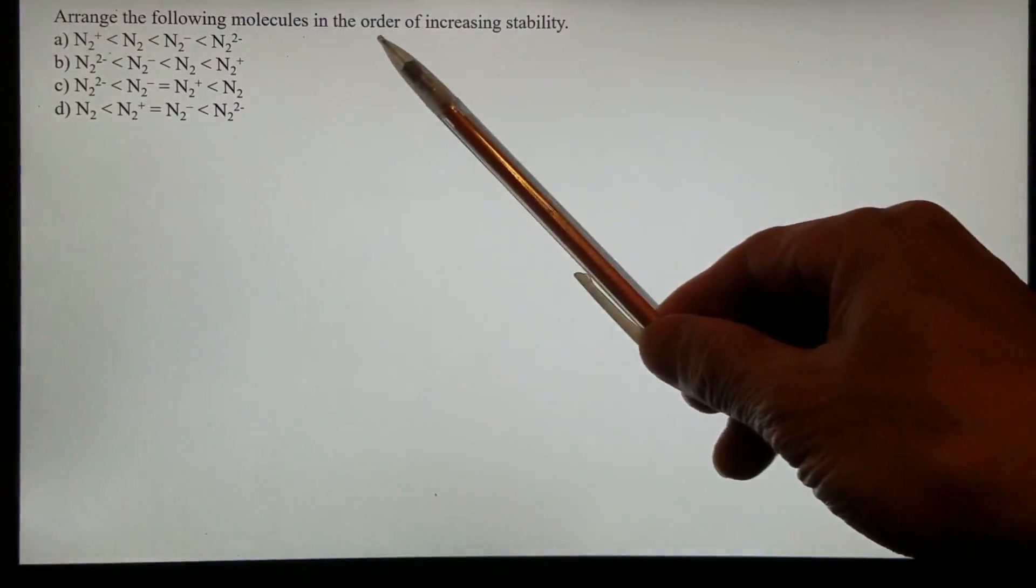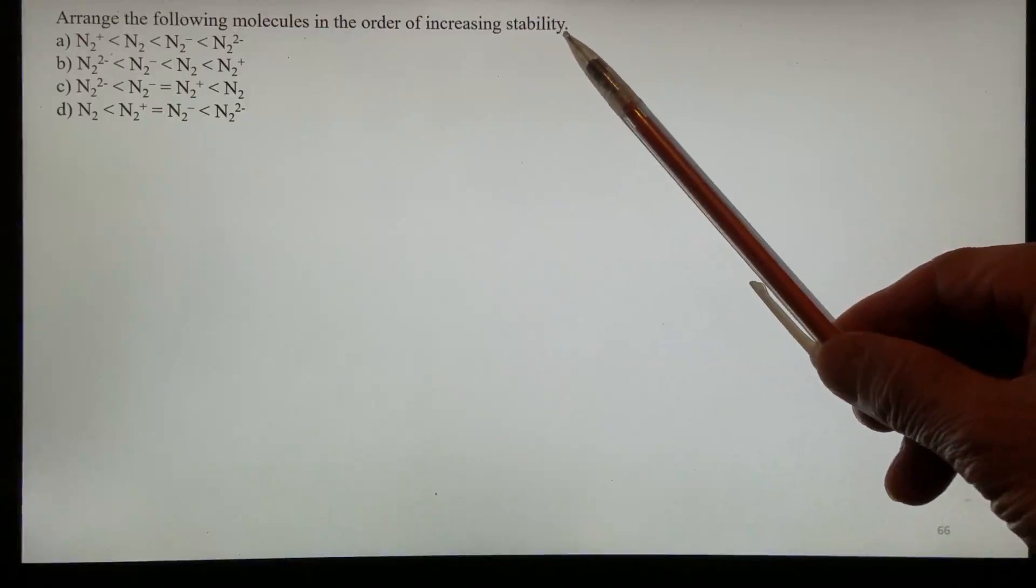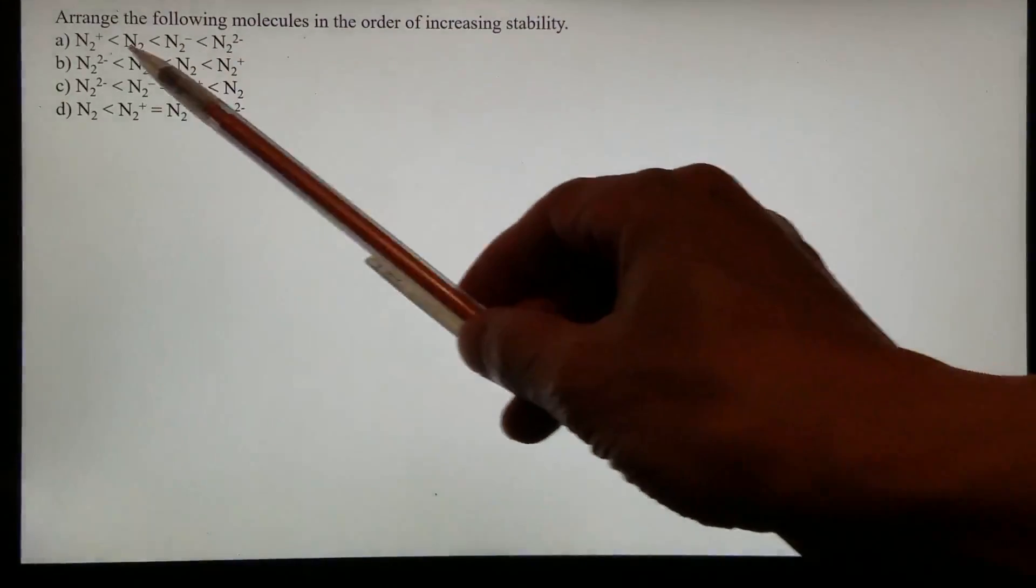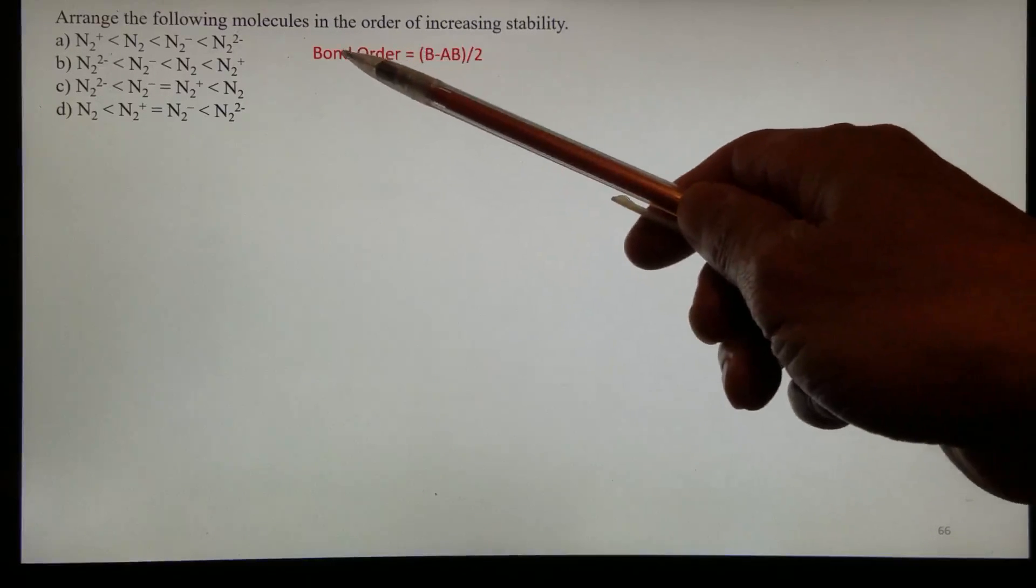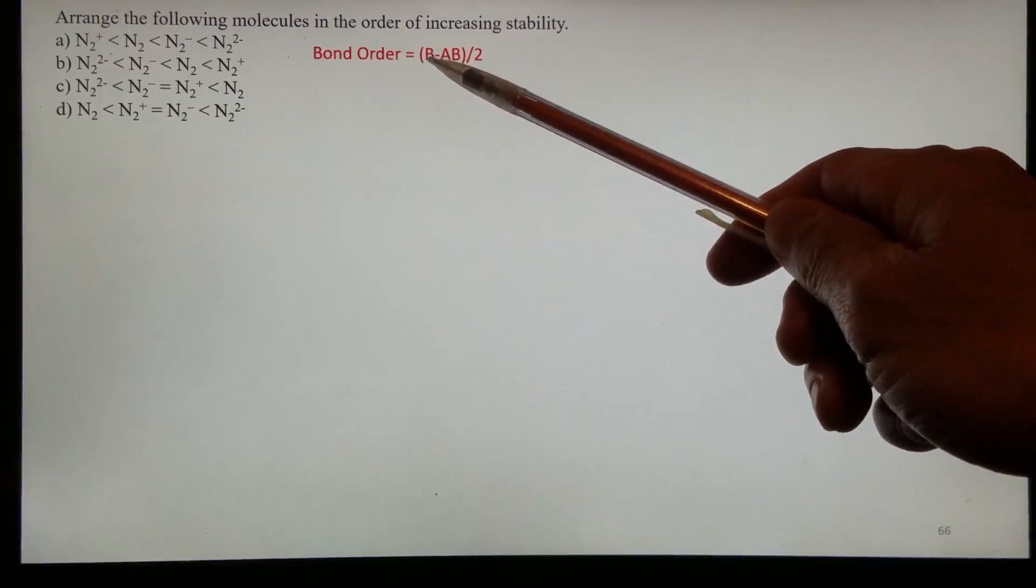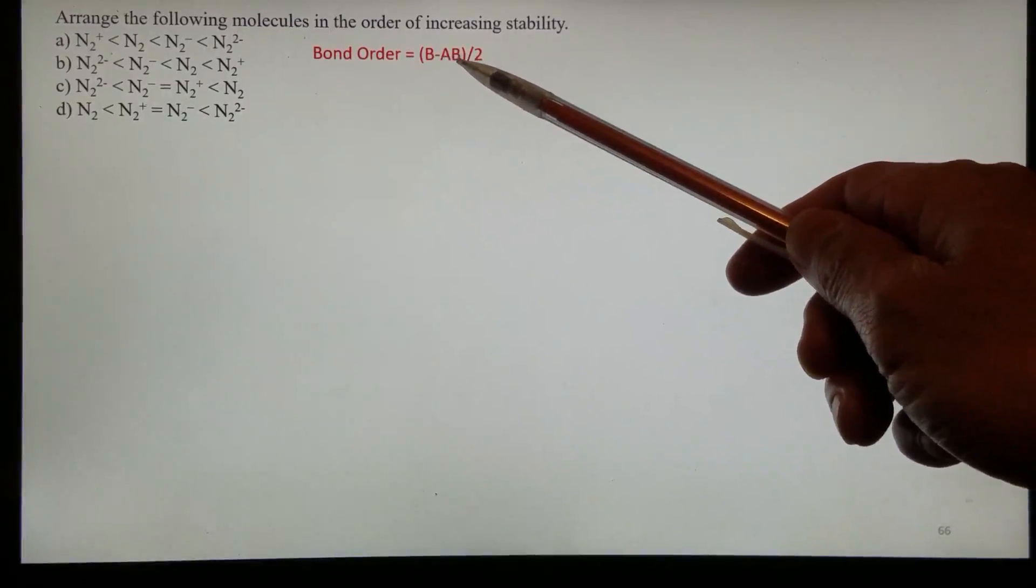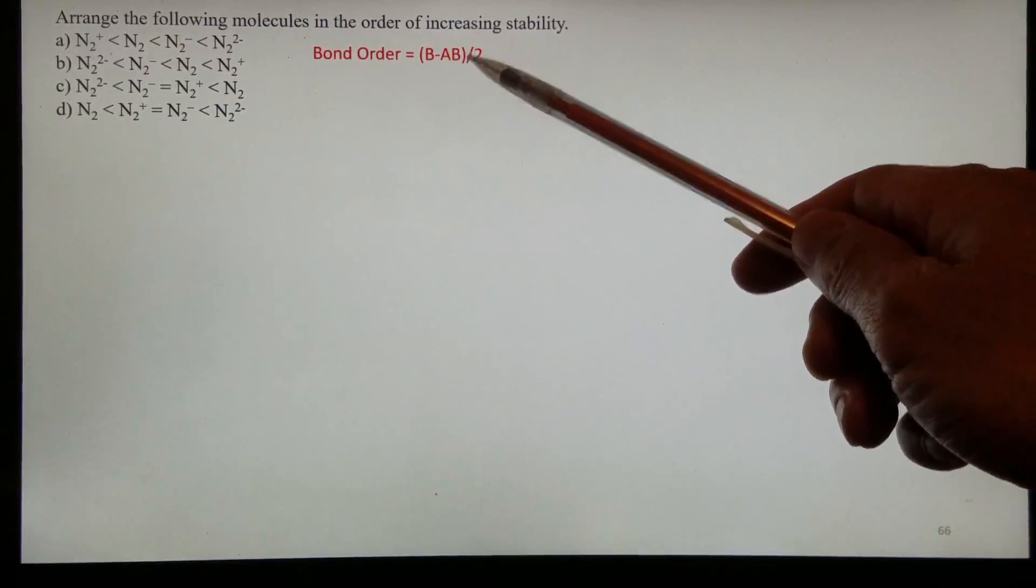Arrange the following molecules in the order of increasing stability. The stability of the species here is related with bond order. So we can calculate bond order using bonding electrons subtracted by anti-bonding electrons divided by 2.